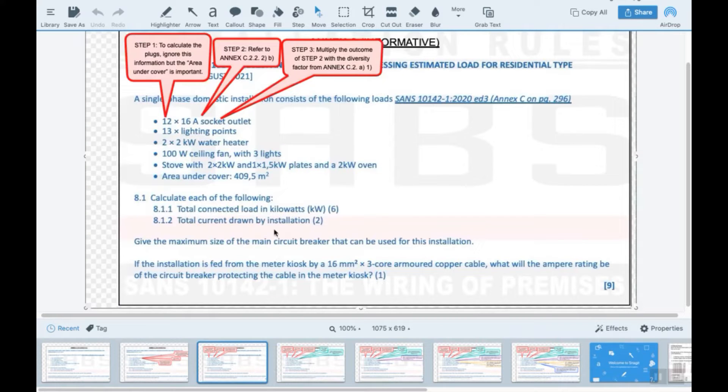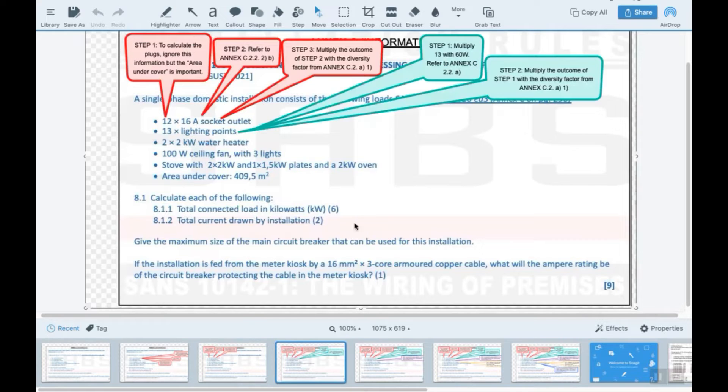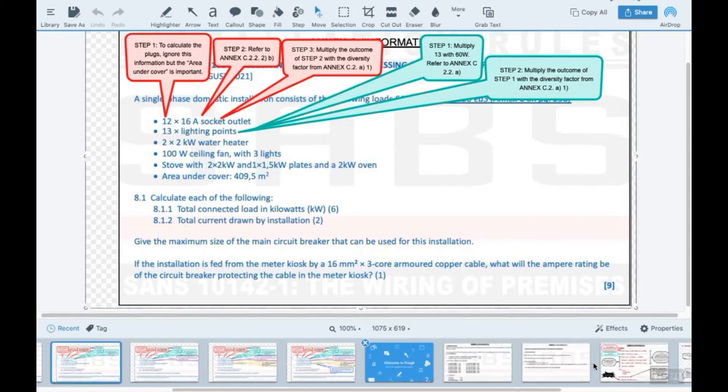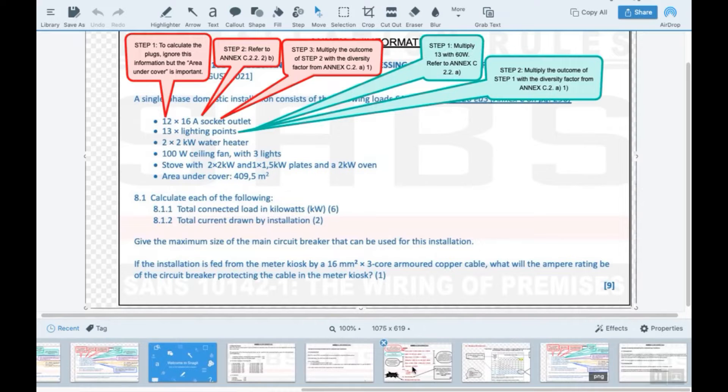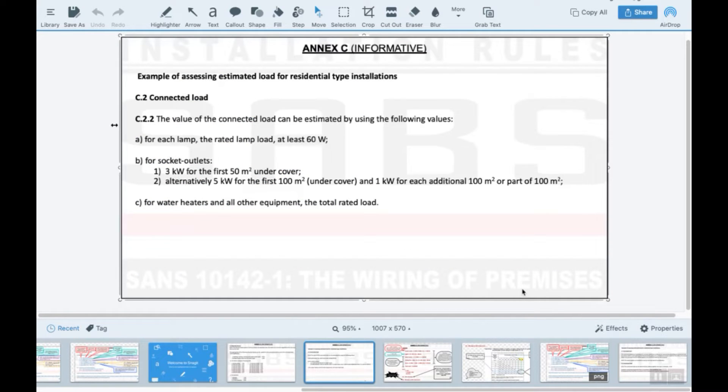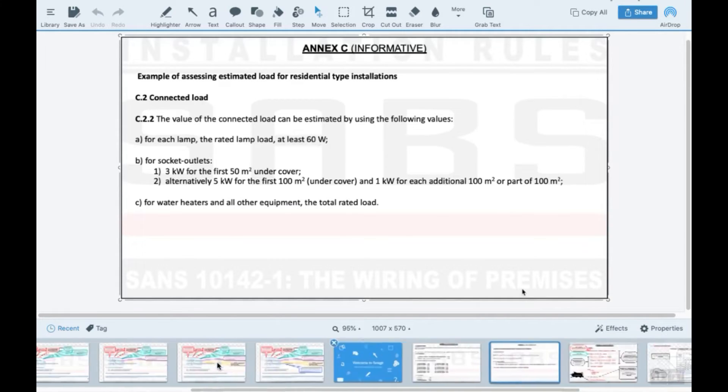So I've summarized that slide. Then the lights we would look at again, SANS Annex C. Where do I get this? I get this here: C 2.2A for each lamp at a rated lamp load at least 60W. So if you have one lamp it would be one lamp times 60 watt. If you have 13 lamps, it's 13 lamps times 60 watt. That's what this means.